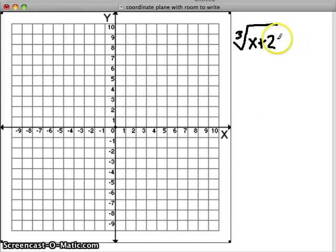So let's use the cube root of x plus 2 minus 1 here. Remember that the center of our cube root graph is going to be at the h and k value. So negative 2, negative 1 is our center.